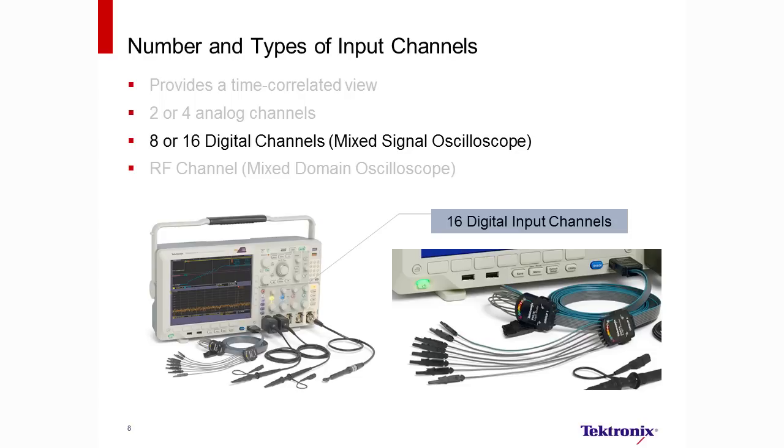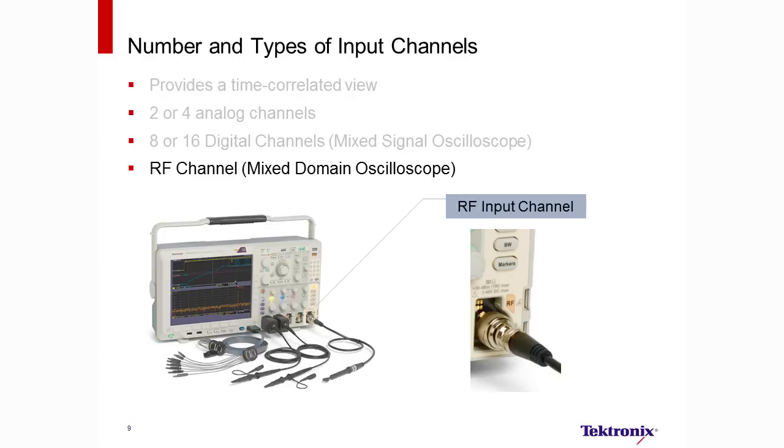An MSO or mixed signal oscilloscope adds digital timing channels which indicate high or low states. Since these channels are often used to work on computer-based systems, digital channels come in bite-sized chunks of 8 or 16 bits. Recently, Tektronix introduced the concept of a mixed domain oscilloscope, or MDO. These instruments include the same analog and digital channels as the MSO, but they also add an RF input channel that behaves almost like a spectrum analyzer.